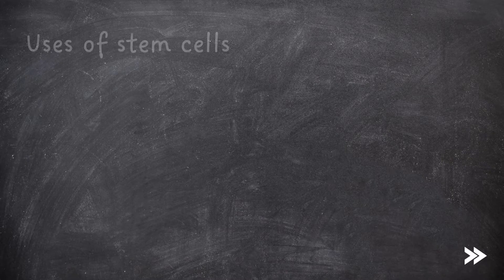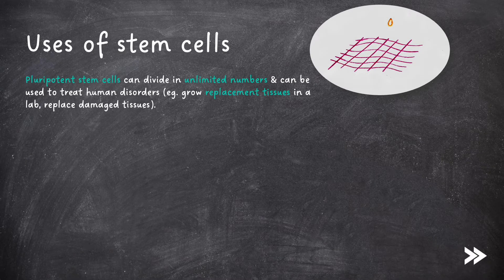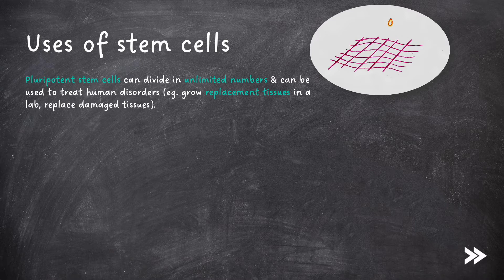Next, we need to know some of the uses of stem cells. Pluripotent stem cells can divide in unlimited numbers and can be used to treat human disorders. For example, they can be used to grow replacement tissues in a lab to replace damaged tissues.